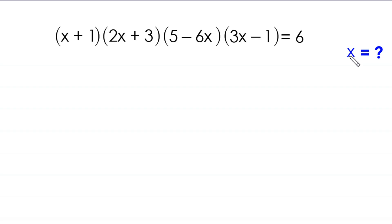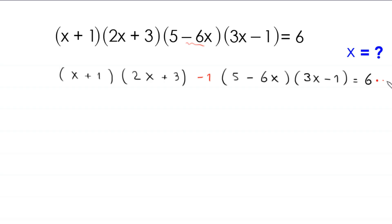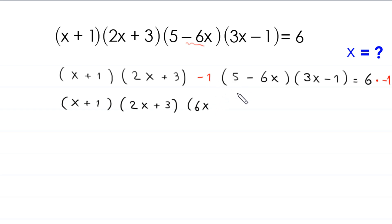First, to make the negative 6x positive, we multiply both sides of this equation by negative 1. On the left hand side: (x + 1)(2x + 3) multiplied by negative 1 times (5 - 6x)(3x - 1). Negative 1 times negative 6x becomes positive 6x, and negative 1 times 5 becomes negative 5.